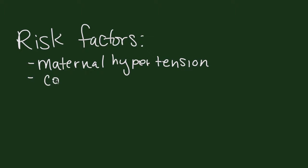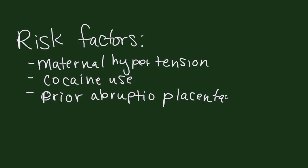Number two is cocaine use. Number three is prior abruptio placentae. Four, cigarette smoking, usually chronic.